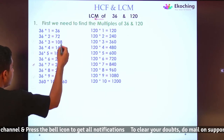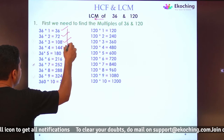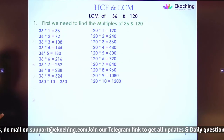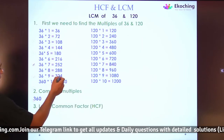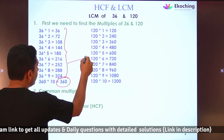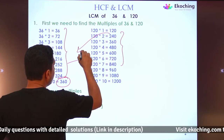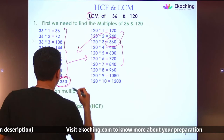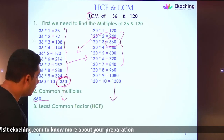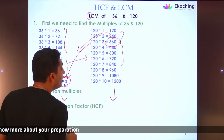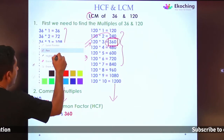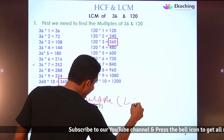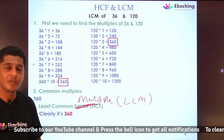For LCM, we look at multiples. The multiples of 36 are: 36, 72, 108, and so on. The multiples of 120 are also listed. We look for the first common multiple. The least common multiple — LCM — of 36 and 120 is 360.